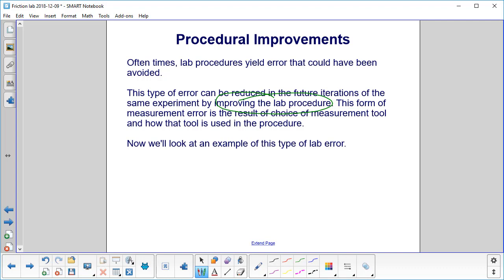This form of measurement error can be the result of a choice of measurement tool and how that tool is used in the procedure. Now let's look at an example of this type of error.